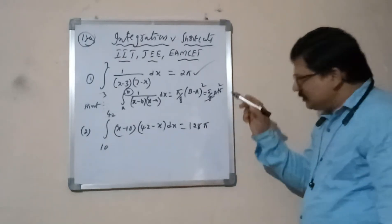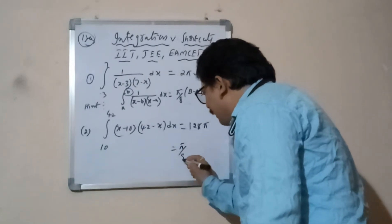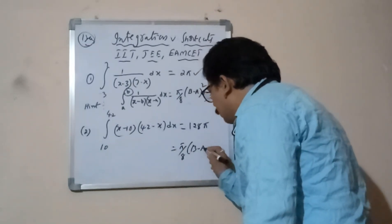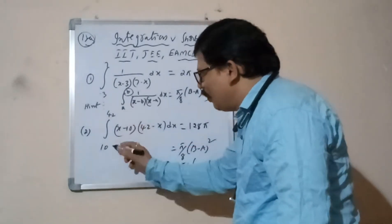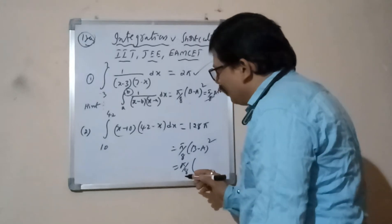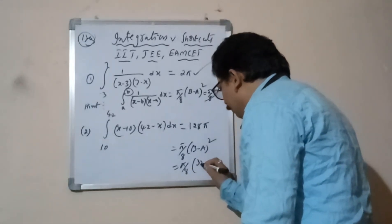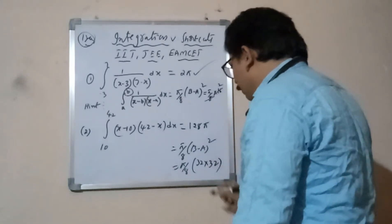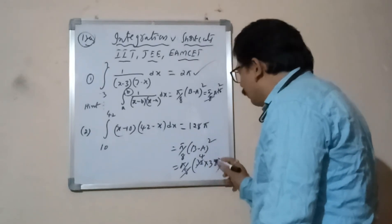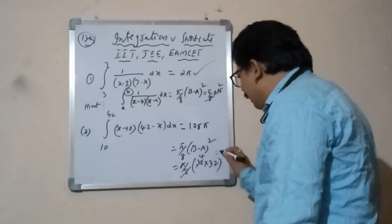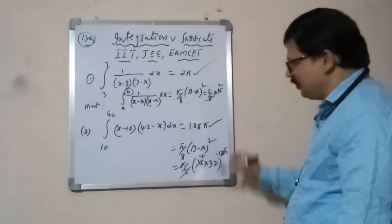Shortcut. Second one also same formula only. π by (b minus a) whole square. π by, b minus a means 42 minus 10, 32 into 32 you multiply, 8 into 32 is 128. That actually 128π, that's our answer finish.